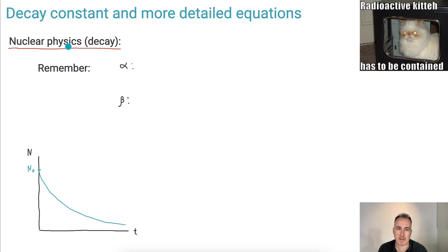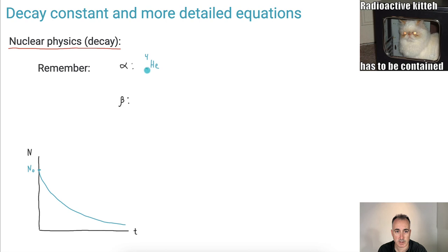Let's remember just what happens for decay. An alpha particle — you need to know this — it's really a helium-4. That means it's got four nucleons and two protons.